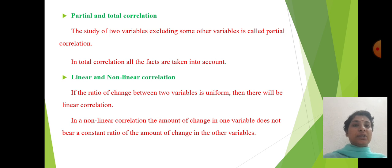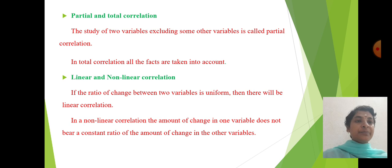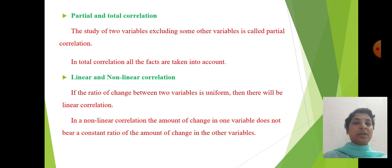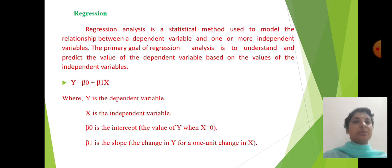In linear correlation, if the ratio of change between two variables is uniform, then there is linear correlation. In non-linear correlation, the amount of change in one variable does not bear a constant ratio to the amount of change in the other variable.